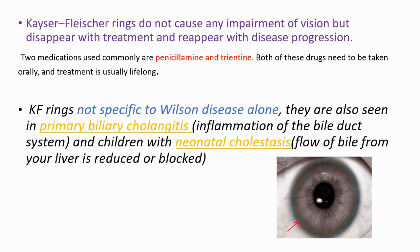These rings are not specific to Wilson disease alone. They can also be seen in primary biliary cholangitis, which is inflammation of the bile duct, and in neonatal cholestasis. If you liked the video, please push that like button, share with your friends, and see you in the next video.